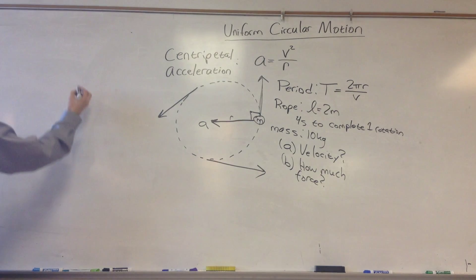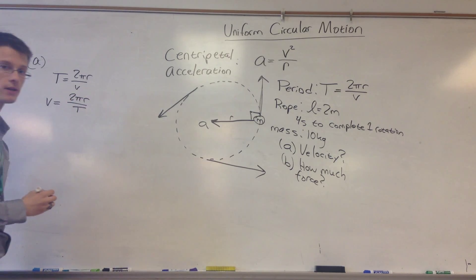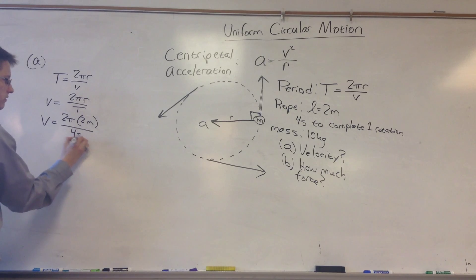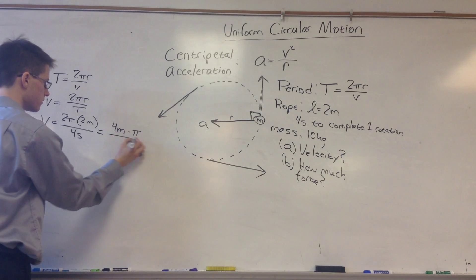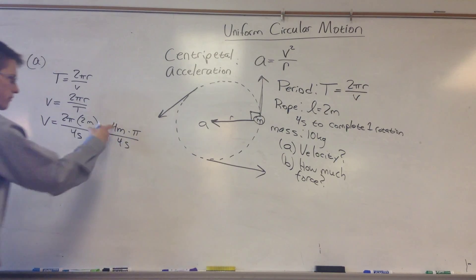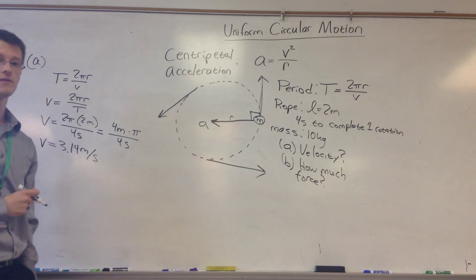So we can actually use the period equation to solve it. So T is equal to 2 pi R over V, this is part A, we can rearrange this and say that V is equal to 2 pi R divided by T, and then we can substitute in the values that we know. So V is going to be equal to 2 pi times 2 meters divided by 4 seconds. So this gives you 4 meters times pi divided by 4 seconds, which 4 over 4 is 1, so you get that V is equal to about 3.14 meters per second. And that's the velocity of the object.